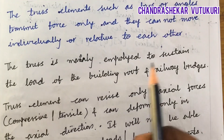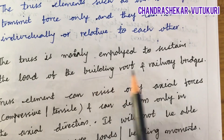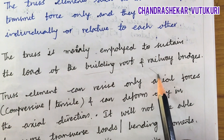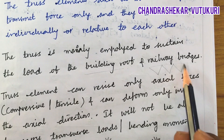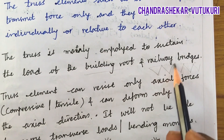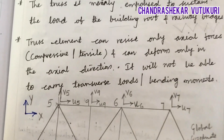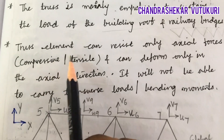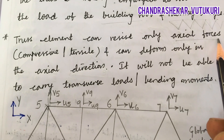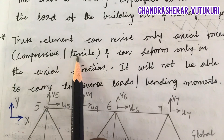The truss is mainly employed to sustain the load of the building roof and railway bridges. You might have seen it used for the support of building roofs as well as bridges. This is nothing but a truss element. The truss element can resist only axial forces — that means either compressive or tensile.